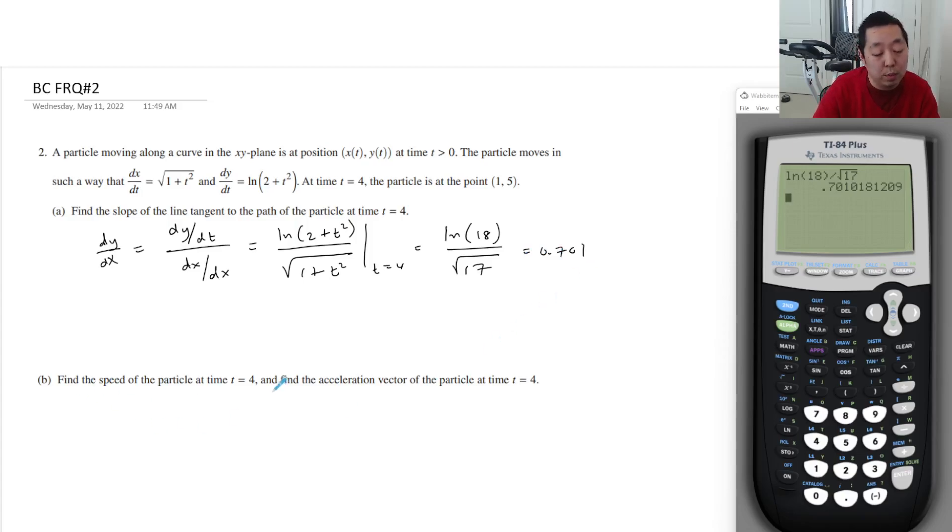Find the speed of the particle. Speed is equal to the square root of dx/dt squared plus dy/dt squared. And so that's going to be the square root of the x component. This is dx/dt, this is dy/dt, so it's going to be square root of 17 squared plus ln of 18 squared.